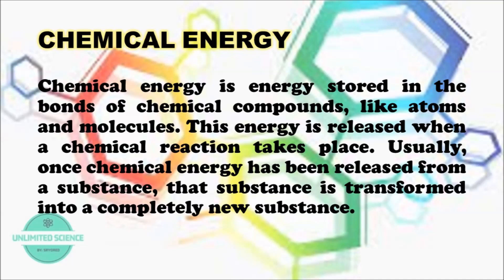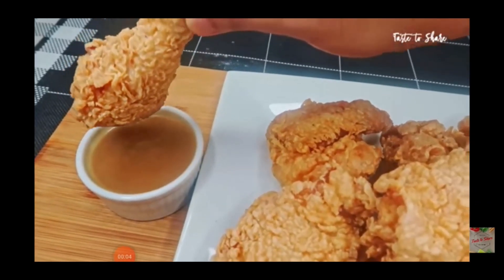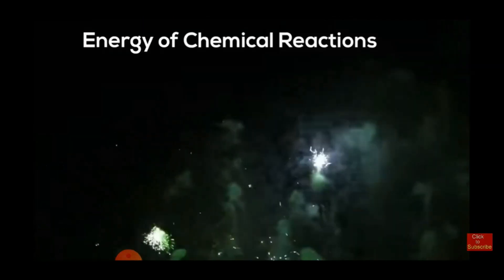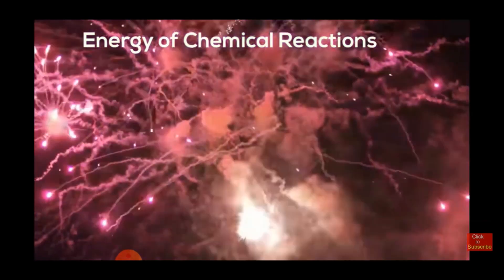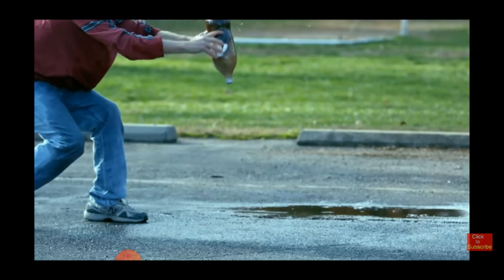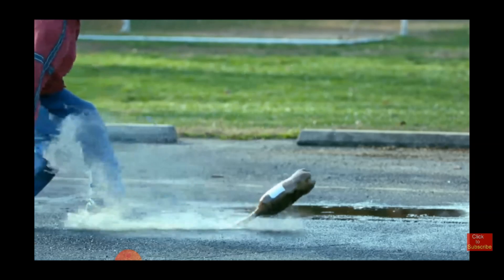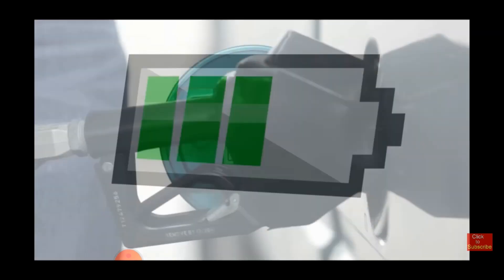Usually, once a chemical energy has been released from a substance, that substance is transformed into a completely new substance. An example of that is food. The food that we eat contains nutrients. Fireworks display is also a product of chemical reaction, as well as the cool experiment regarding the soda and baking soda. Battery and gasoline are also examples of chemical energy.